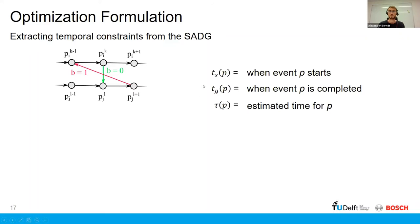So before that, let's discuss how we can extract the temporal constraints of the switchable action dependency graph. So if we have just a subset of an SADG here, we will introduce these operators TS, which is the time at which an event P starts. And this event P is some vertex in the ADG.